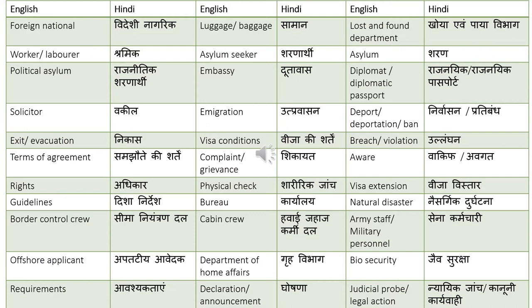Breach or a violation — ulangan. Aware or awgat. Visa extension — visa avistar. Natural disaster — nisargik durgatna. Army staff or military personnel — sena karmachari. Biosecurity — jaiv suraksha. This is used in the context where there is a dialogue saying there is biosecurity at the airport, so jaiv suraksha is how we translate biosecurity. Judicial probe or a legal action — nyayik janj or kanuni karyavahi.